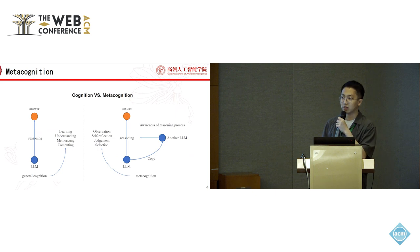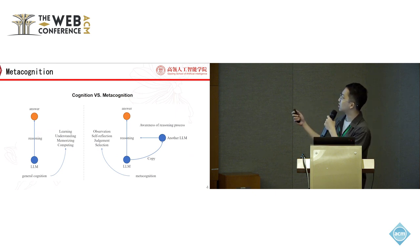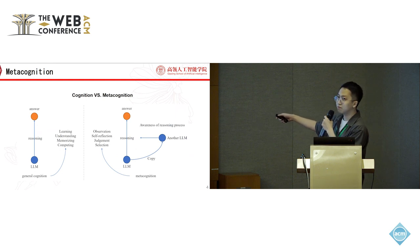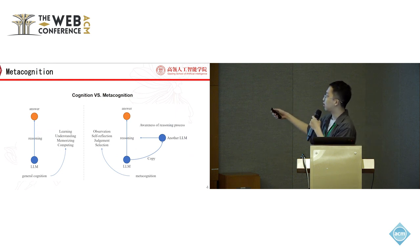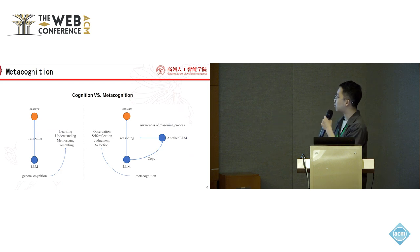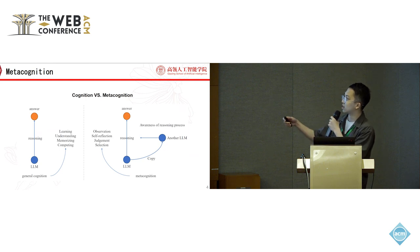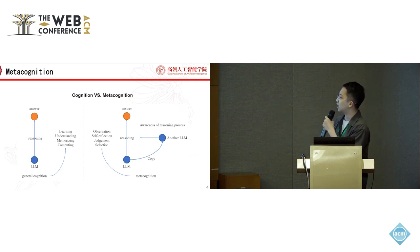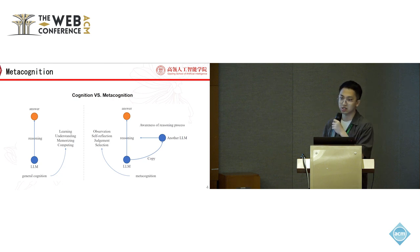We introduce the concept of metacognition. What is the difference between cognition and metacognition? The left part is the general cognition process, where the language model directly reasons the answer. It focuses on learning, understanding, memorizing, and computing. The right part is the metacognition process, which employs another language model — it is awareness of the reasoning process, and focuses on observation, self-reflection, judgment, and selection.